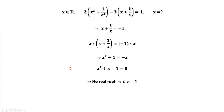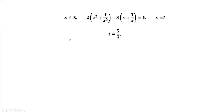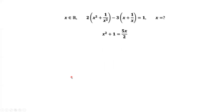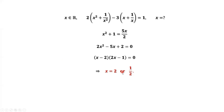Consider the second solution: t equals 5 over 2. That means x plus 1 over x equals 5 over 2. Similarly, multiply both sides by x and simplify. We have x squared plus 1 equals 5x over 2. Multiplying both sides by 2 and moving 5x to the left-hand side gives this quadratic equation. Factoring or using the quadratic formula, the two solutions are x equals 2 and x equals 1 half. Therefore, x equals 2 or 1 half.